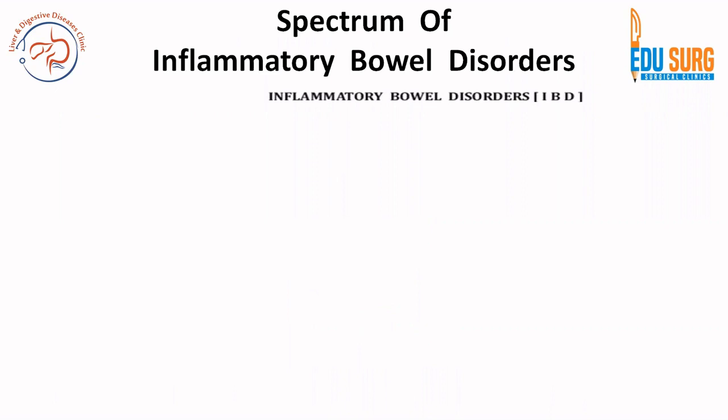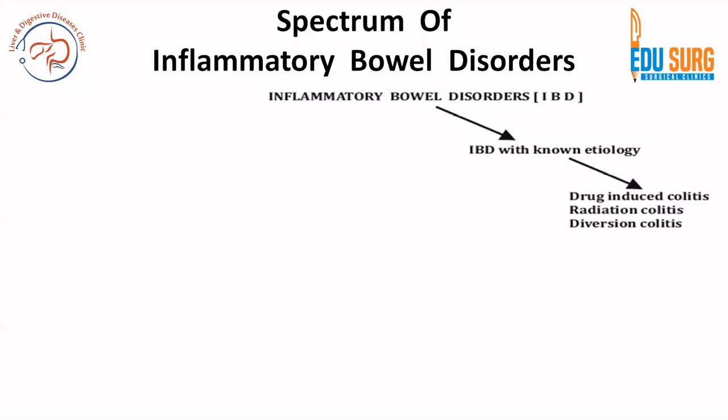When we talk of the spectrum of inflammatory bowel disorders, we usually think of ulcerative colitis and Crohn's disease — the commonly taught types. However, the spectrum is much more than that. There can be inflammatory bowel disorder of known etiology, such as drug-induced colitis, radiation colitis, or diversion colitis — where the bowel is inflamed because of drugs, radiation, or diversion.